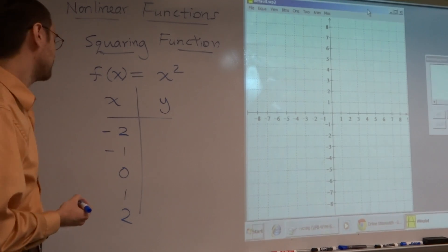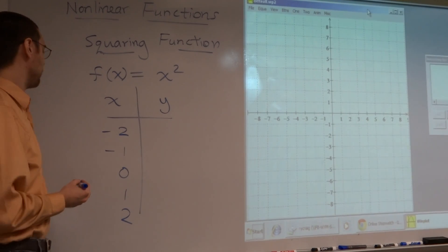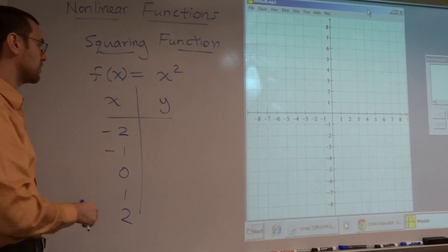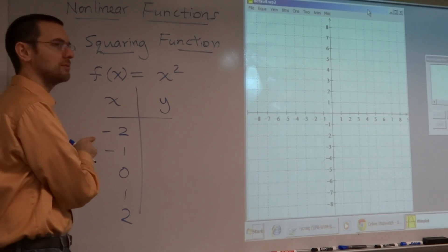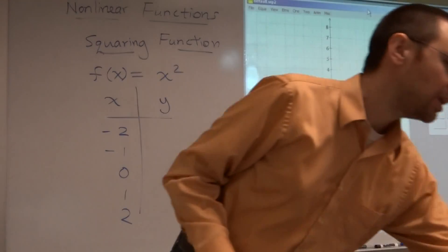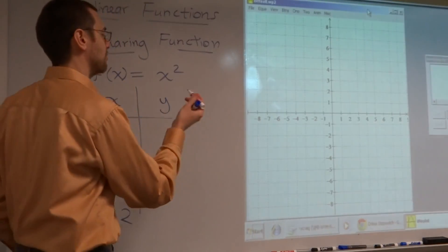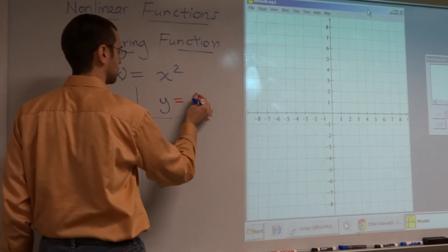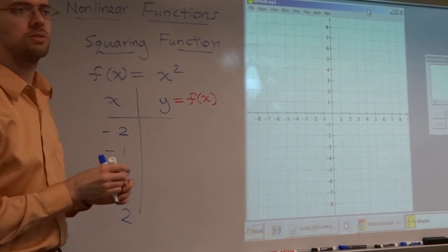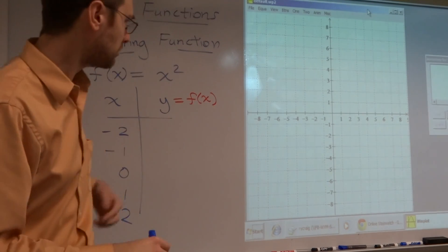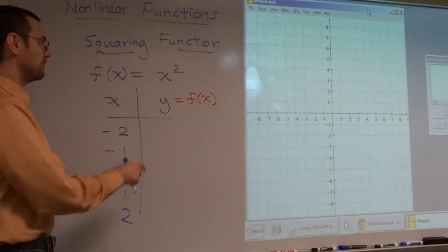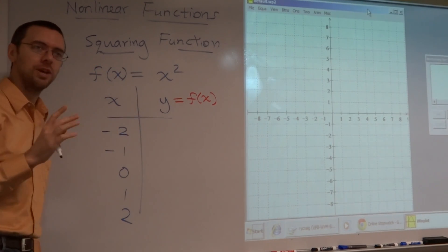So let's do negative 2, negative 1, 0, 1, and 2. We're just going to plug them into this function. So if I plug in negative 2, what do I get? And when I say y, I guess I really should be writing y. y is the same thing as saying f of x, right? This is just what we did yesterday.